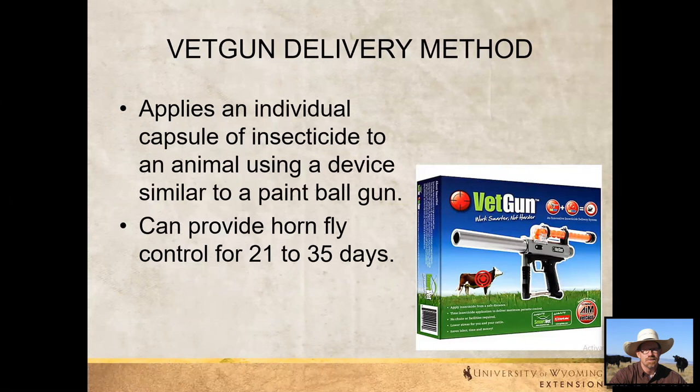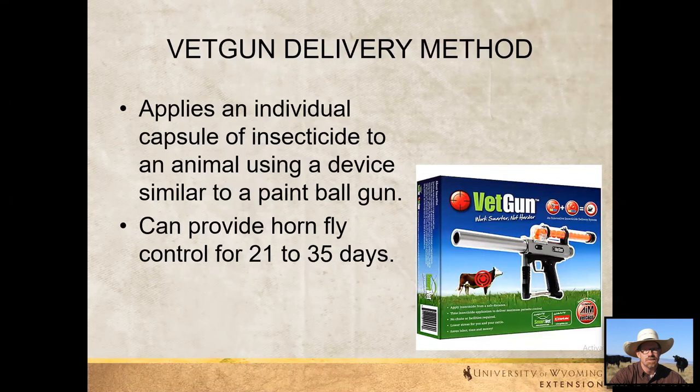There's also a vet gun delivery method, which has been around for a number of years. This applies an individual insecticide capsule to the animal, kind of like a paintball gun. Control has been reported at 21 to 35 days. There are questions about whether shooting cattle with this might make them more flighty or harder to gather, but it is out there as an option.